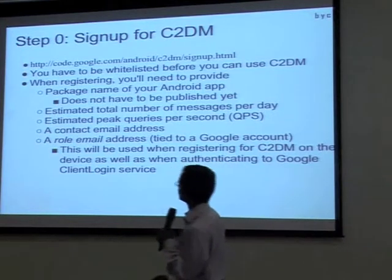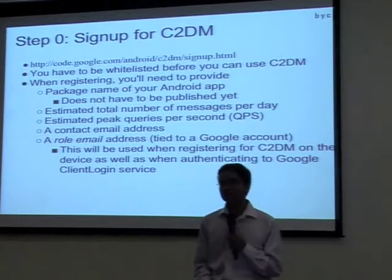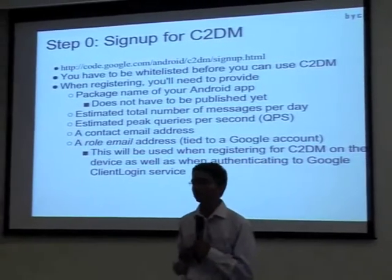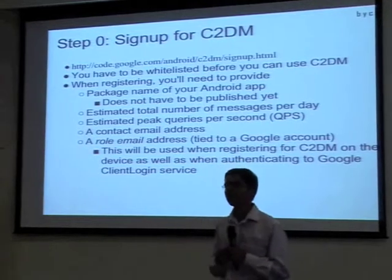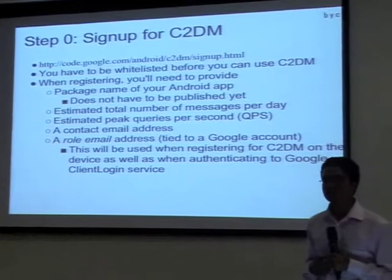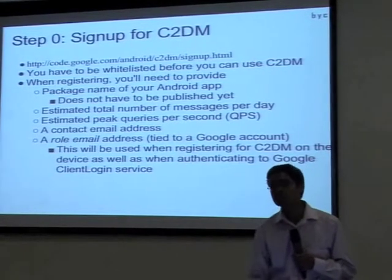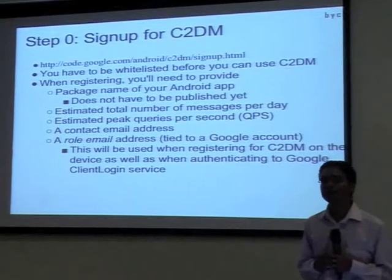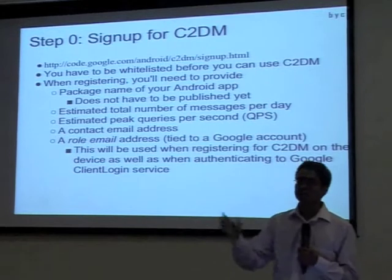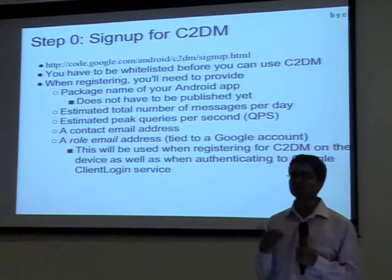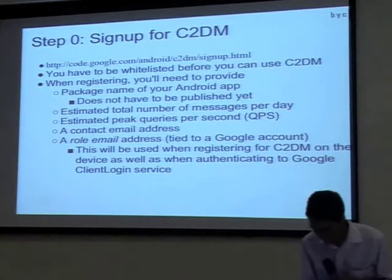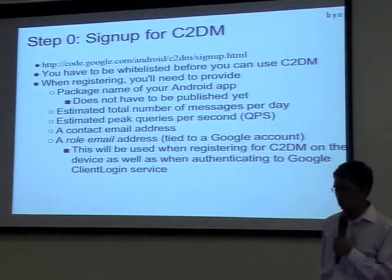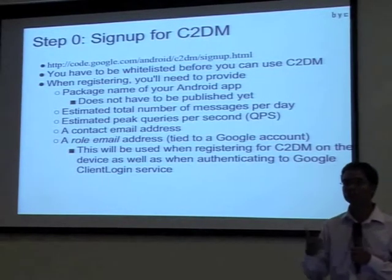Step 0: you need to sign up for an account. Since C2DM is still in beta and in the labs, you need an account that is whitelisted. You go to the sign-up page and provide details — an estimate of how many messages you will send, the peak number of messages — and it is currently limited to 2 million messages per day for that sender. You need to give a contact email and a role email tied to your Google account, which is the sender address used for sending notifications.